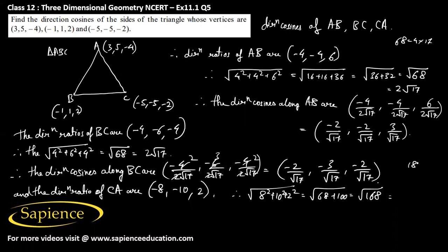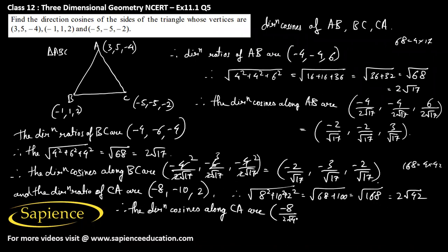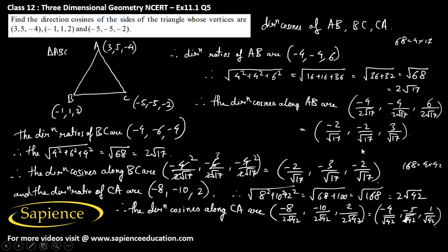168 is equal to 4 into 42, so square root of 168 is 2 root 42. Therefore, the direction cosines along side CA are: minus 8 by 2 root 42, minus 10 by 2 root 42, and 2 by 2 root 42. Simplifying, that will be minus 4 by root 42, minus 5 by root 42, and 1 by root 42. These are the required direction cosines.